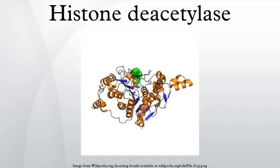HDAC6 deacetylates tubulin, Hsp90, and cortactin, and forms complexes with other partner proteins, and is therefore involved in a variety of biological processes.